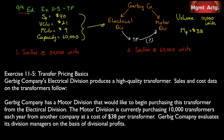Gerbig Company's electrical division produces a high-quality transformer. Sales and cost data on the transformer: the selling price is $40, the variable cost per unit is $21, fixed cost per unit is $9, and there's a capacity of 60,000 units. Those are the features of the electrical division.